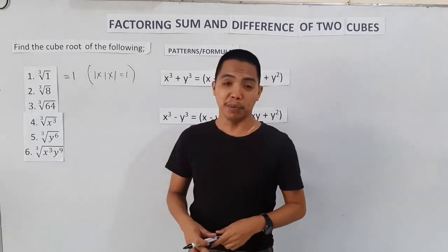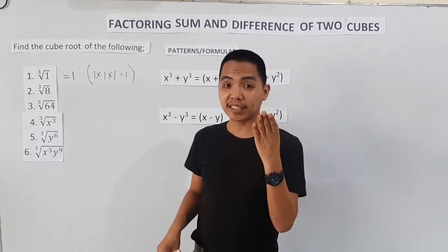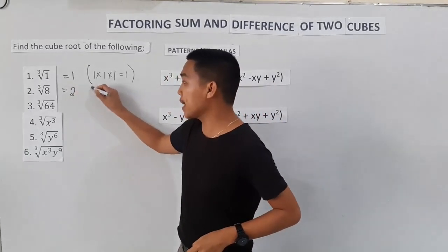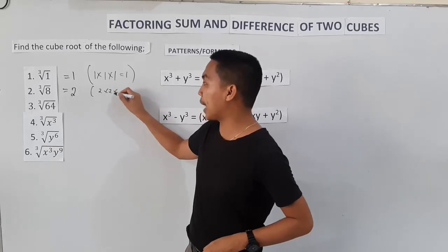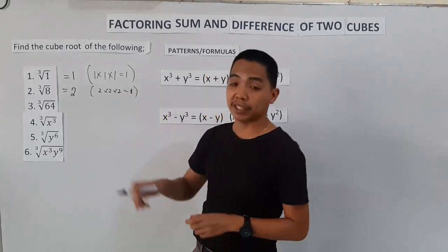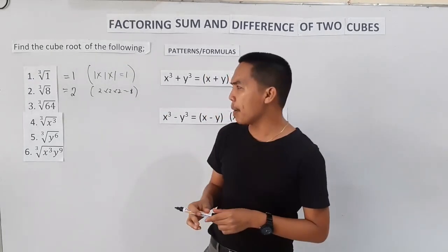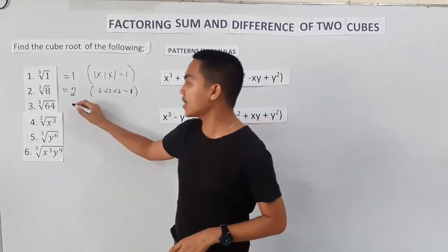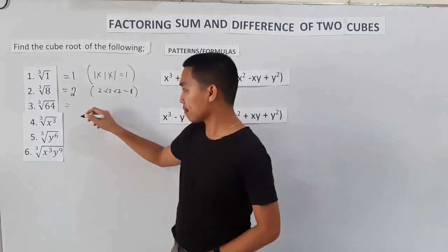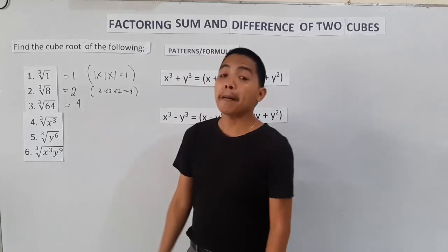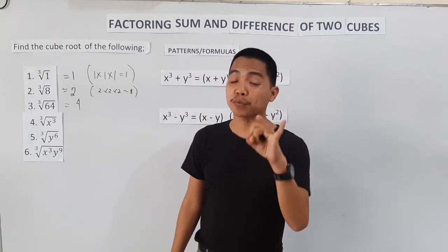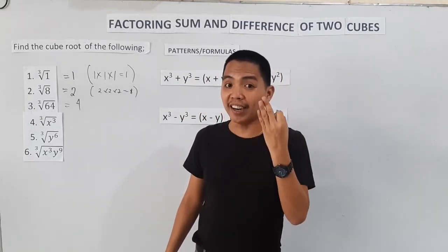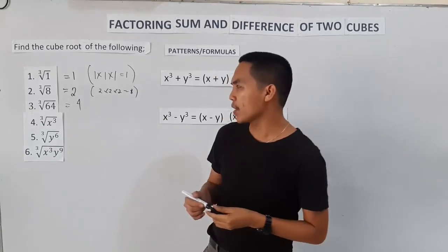How about the cube root of 8? The answer is two. Because two times two times two is equal to 8. How about the cube root of 64? That is four. Because four times four is sixteen, and sixteen times four is sixty-four.